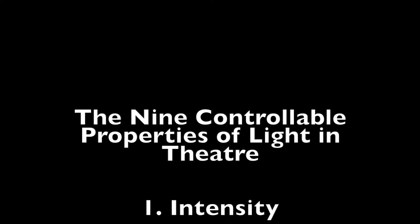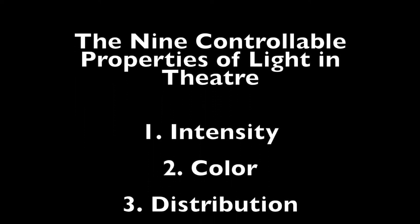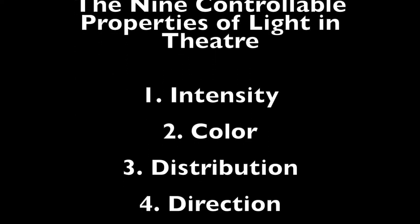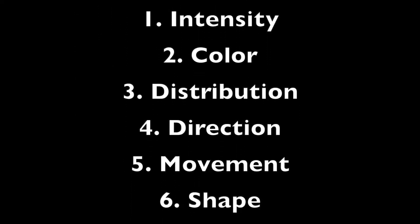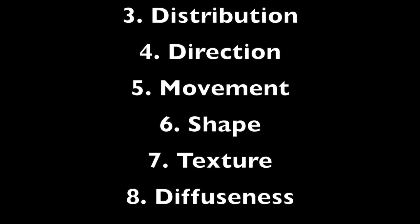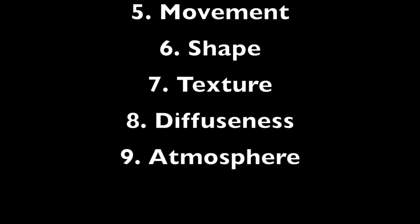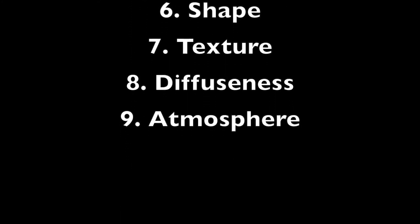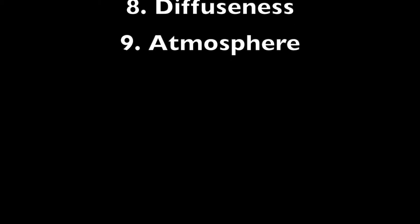Let's look at the nine controllable properties of light in theater: intensity, color, distribution, direction, movement, shape, texture, diffuseness, and atmosphere.